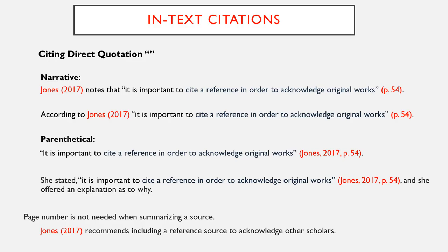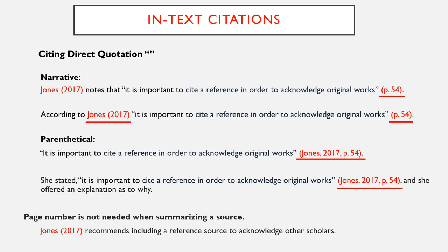Citing a direct quotation: for the narrative in-text citation, if a direct quotation from a source is used, a page number needs to be referenced. For the narrative style, the page number is included at the end of the sentence. If you introduce the quotation with a signal phrase, it includes the author's last name followed by the date of publication in parentheses. In a parenthetical style in-text citation that uses a direct quote, the page number is included after the author's last name and date of publication in parentheses. If you do not include the author's name in the text of the sentence, place the author's last name, year of publication, and page number in the parentheses after the quotation. Note that a page number is not needed when summarizing a source.